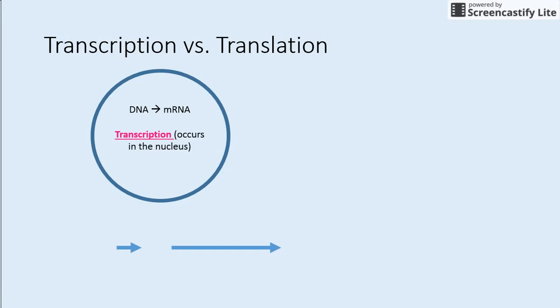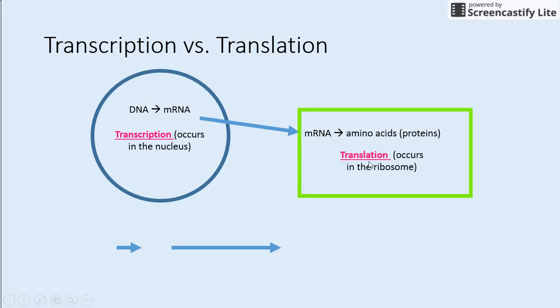Go ahead and draw this diagram on the second page of your notes: transcription versus translation. Our first step is DNA has to get into mRNA - that is called transcription and it occurs in the nucleus. Then the mRNA, since it can leave the nucleus, goes to code for the amino acids and this makes our proteins. We should know by now that proteins are made in the ribosome and this is called translation.